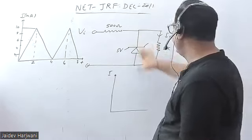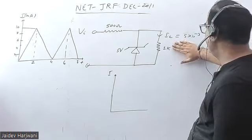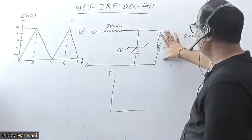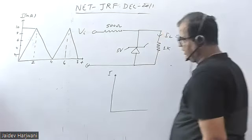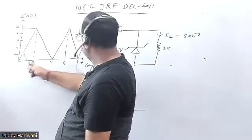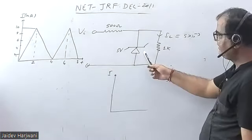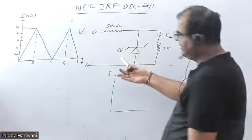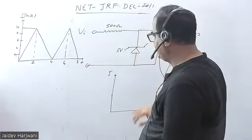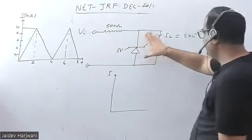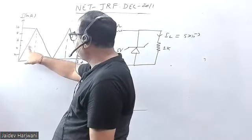In order for this voltage to become 5 volts, the load current should be at least 5 milliamperes. When the current reaches 5 milliamperes, the voltage becomes 5 volts and will become fixed. So whenever your input current is passing through here, it has to be a minimum of 5 milliamperes to make this diode turn on. Once it is at or above 5 milliamperes, this diode will conduct.